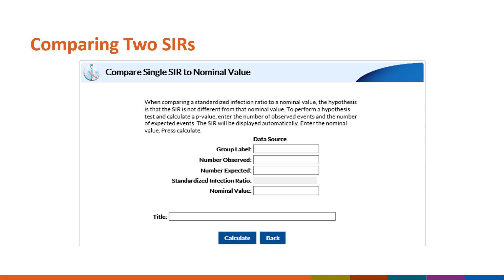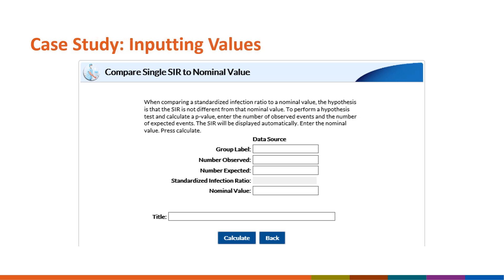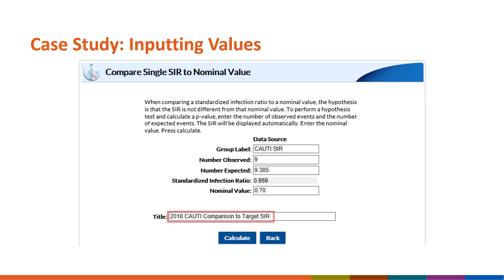You'll see a blank input screen, as pictured here. Everything entered into the data fields on this screen will appear in your results. Under Data Source, enter a Group Label in the Group Label field — we used 'CAUTI SIR.' Enter the number of observed infections and number of predicted infections, also known as expected infections, from the SIR report that you ran earlier. The standardized infection ratio will automatically be calculated and displayed. Under the Calculated Standardized Infection Ratio, enter your target SIR in the Nominal Value field — here we entered 0.70, since that is our chosen target CAUTI SIR. You can also add a title for your results, which is recommended if you'll be printing or sharing results with others. Next, click Calculate to generate your results.